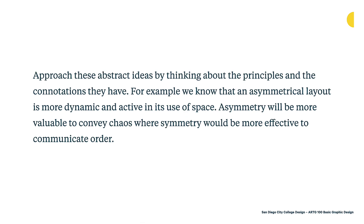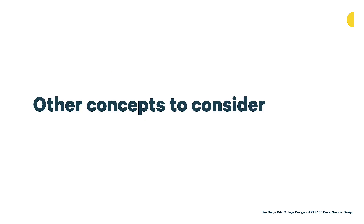Approach these abstract ideas by thinking about the principles and the connotations they have. For example, we know that an asymmetrical layout is more dynamic and active in its use of space. Asymmetry will be more valuable to convey chaos, where symmetry will be more effective to communicate order. In addition to this, there are some other overarching concepts about design and visual communication that can help you not only in this assignment, but in all of the work that you do as a graphic designer.